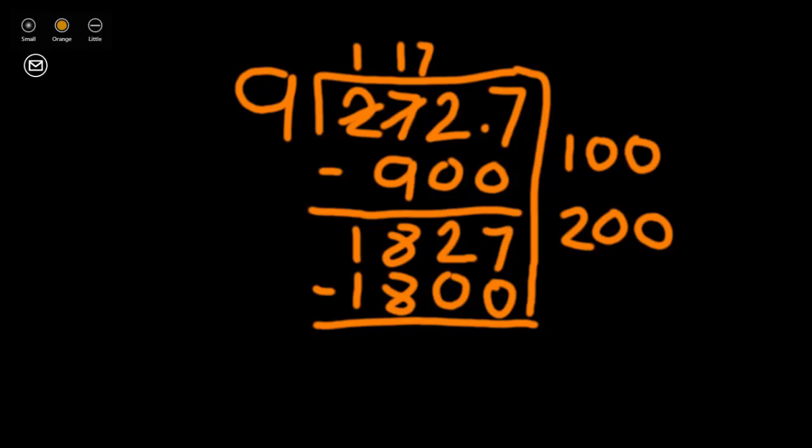We don't need to trade first anywhere, so we can begin to subtract. 7 minus 0 is 7. 2 minus 0 is 2. And we know that we will be putting zeros in the next two columns because 8 minus 8 is 0 and 1 minus 1 is 0. But I'm not going to put my zeros in because we really don't need to. So now our new dividend is 27.